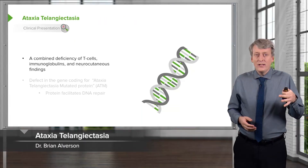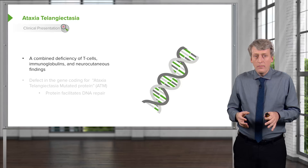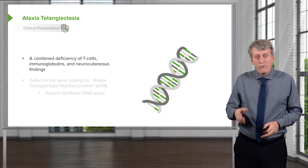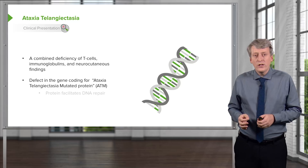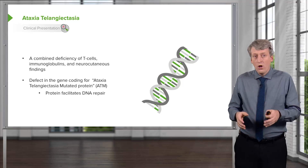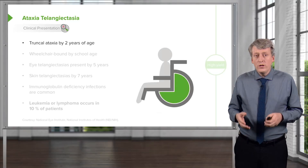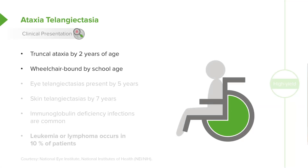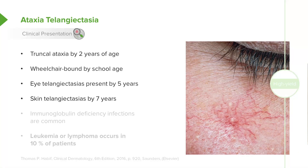In patients with ataxia telangiectasia, they may present slightly differently. These patients have a combined deficiency of T-cells and immunoglobulins, and also have neurocutaneous findings. The defect is in a gene called the ataxia telangiectasia mutated protein, or ATM, which facilitates DNA repair. Generally, they present with truncal ataxia by age two, are often wheelchair-bound by school age, develop eye telangiectasias typically by age five — a complex bed of capillaries — and skin telangiectasias by age seven.